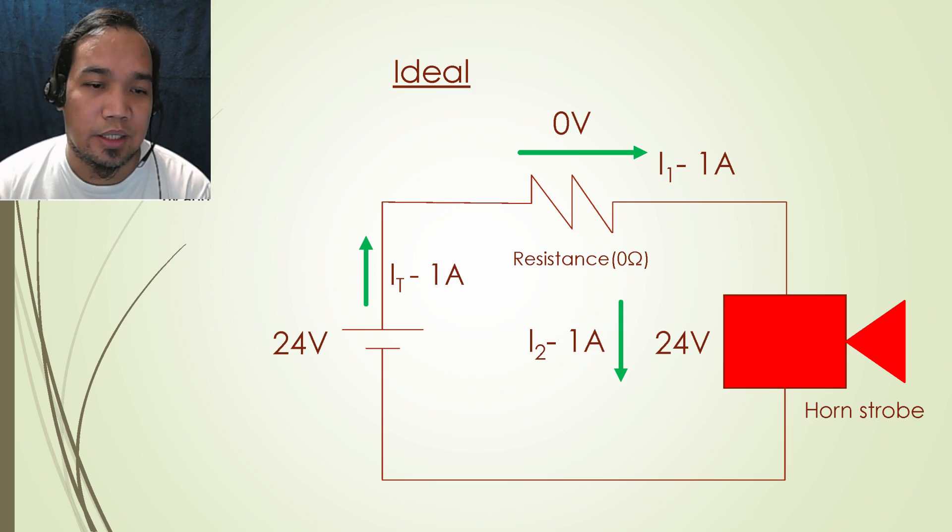If the electrical circuit is ideal, or if the voltage drop from the conductor is negligible, then from the illustration you will observe that the 24 volts from the supply is fully received by the fire alarm horn strobe, while if the voltage drop is zero, the current flowing is the same in series circuit.